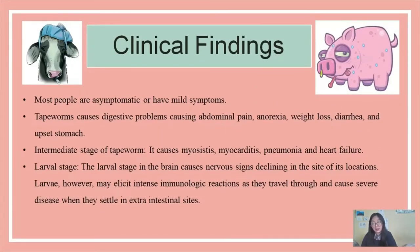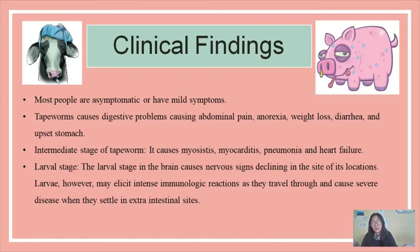Now the clinical findings. Most people are asymptomatic or have mild symptoms. Tapeworms cause digestive problems including abdominal pain, anorexia, weight loss, diarrhea, and upset stomach. The intermediate stage of the tapeworm causes myocarditis, pneumonia, and heart failure. The larval stage in the brain causes nervous signs depending on the site of its location. Larvae may also elicit intense immunologic reactions as they travel through tissues and cause severe disease when they settle in extra-intestinal sites.